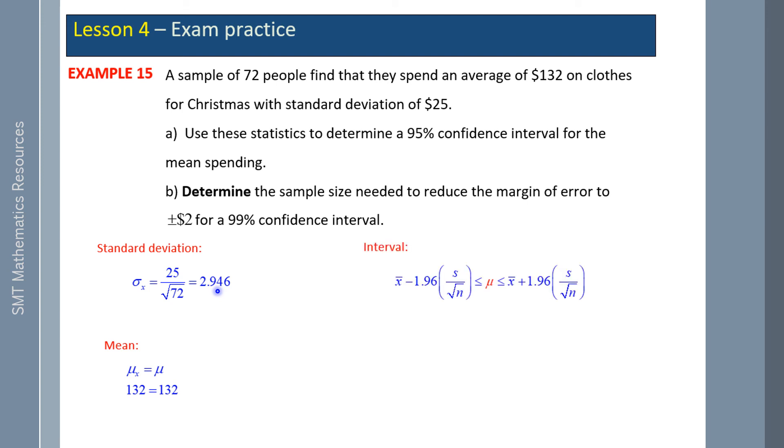So our interval at 95 percent confidence is a z-score of 1.96. We substitute our values in. We can now use our margin of error being 1.96 times 2.946. And our values range between $126.23 and $137.77.